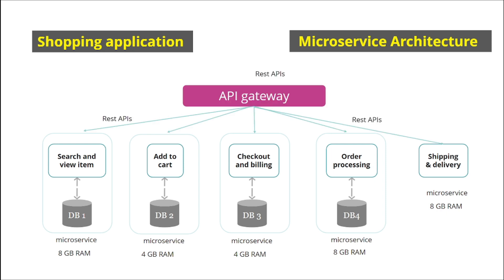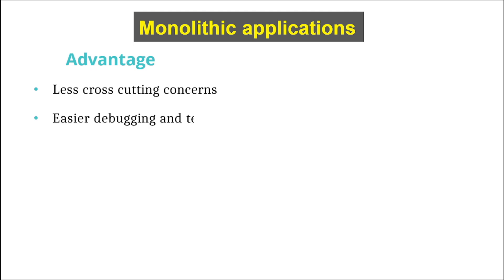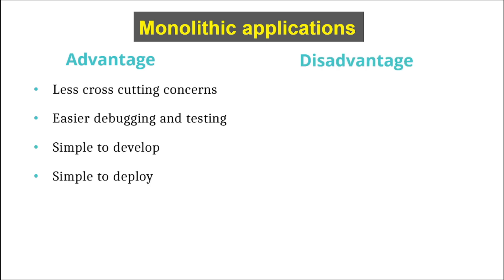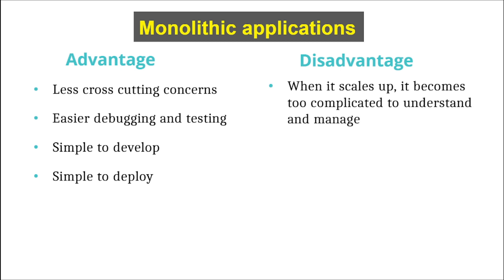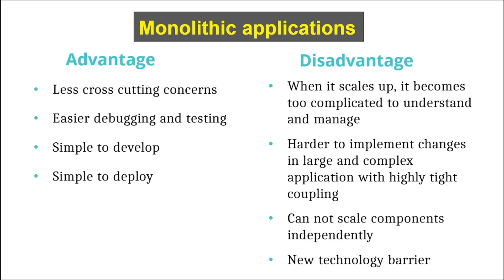To connect from the client we require an API gateway, which works as a middleware for all these services. Let's talk about the advantages of monolithic applications. Monolithic applications have fewer cross-cutting concerns since the whole application is in a single code base — we don't have to worry about externalized configuration, logging, health checkups, and metrics. It is easier to debug and test, simple to develop, and simple to deploy. However, disadvantages include: as it scales up it becomes too complicated to understand and manage, harder to implement changes, tight coupling, and inability to scale components independently.